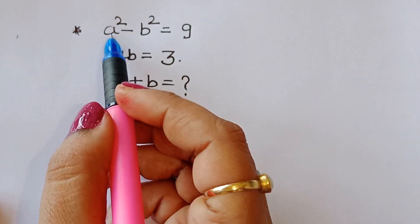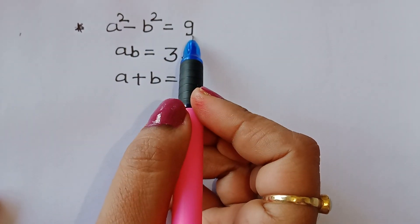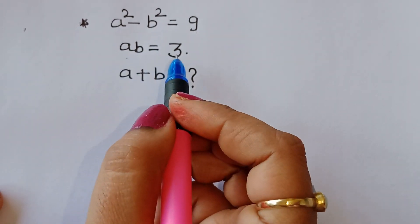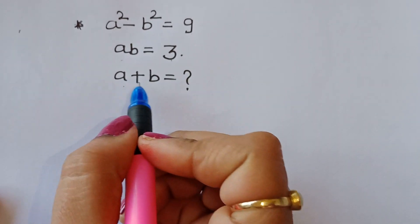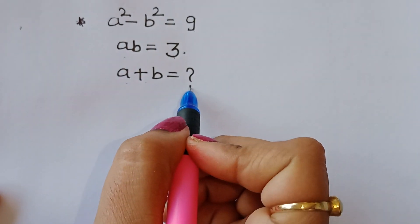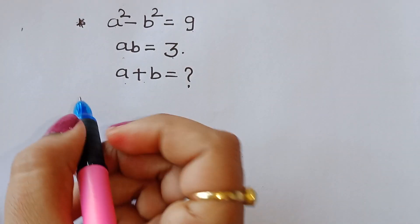The question is given: a squared minus b squared is equal to 9, and ab is equal to 3. We have to find out the value of a plus b. Let's see the solution.